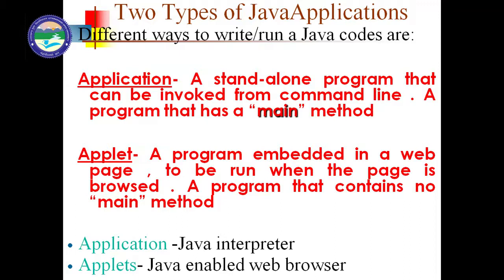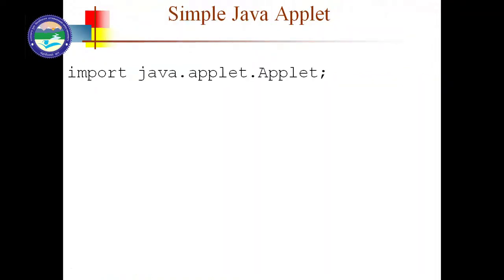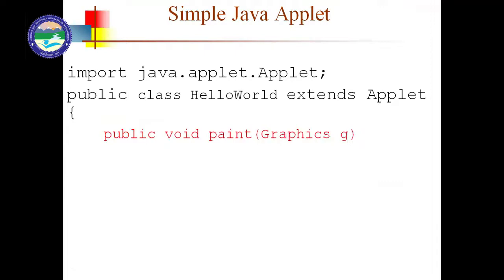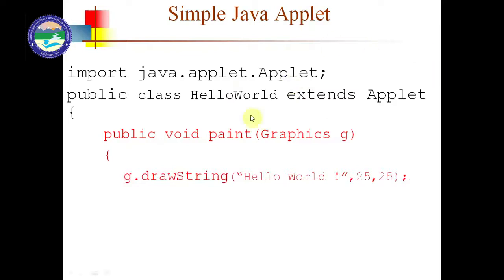The program of Applet can be executed by the browser. This is the difference between Applet and a Java program. You can see here the public class HelloWorld, and this class is extended from Applet. So import java.applet.Applet — Applet is a package, and inside the Applet package we have the Applet class. Here the public void paint function takes a Graphics g argument, in place of public static void main with String args.